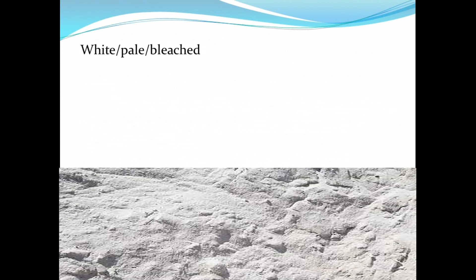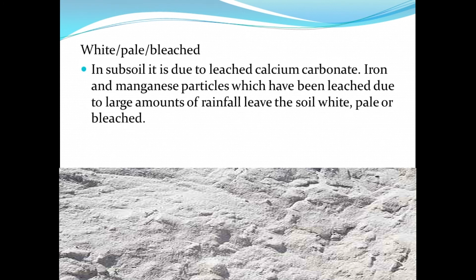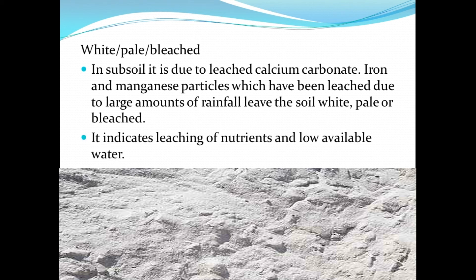Now let's take a look at white, pale, or bleached soil colors. In the subsoil, this is due to leached calcium carbonate, iron, and manganese particles, which have been leached out due to large amounts of rainfall, leaving the soil white, pale, or bleached. It also indicates leaching of nutrients and low available water.